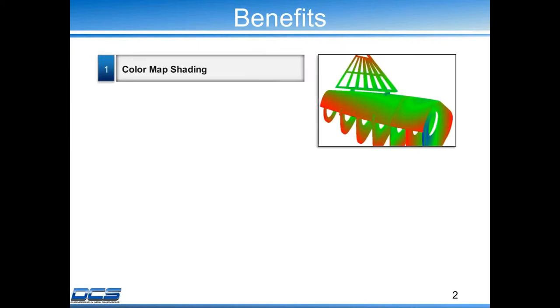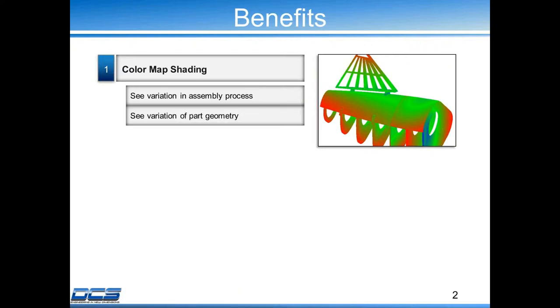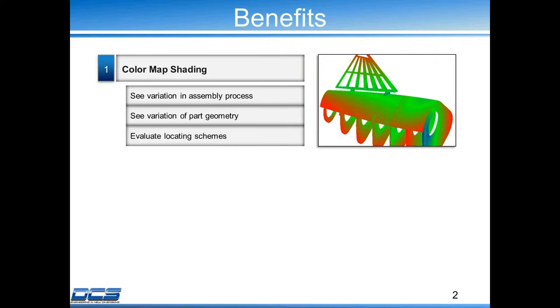I want to touch base on what are the benefits of color mapping and why we want to use it. First of all, we have color map shading. You can see the variation in the assembly process when it's built, the variation of part geometry for the effects of tolerances, and you can also evaluate locating schemes for the tooling processes.